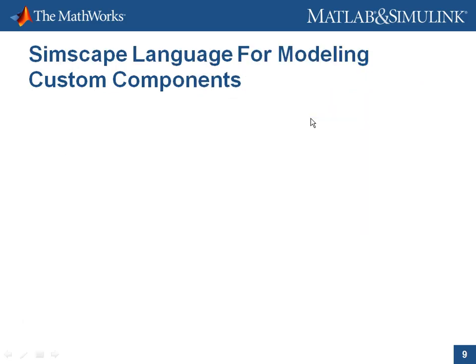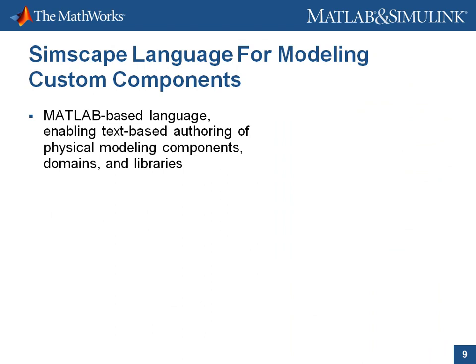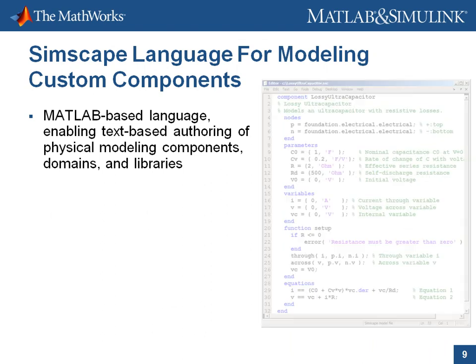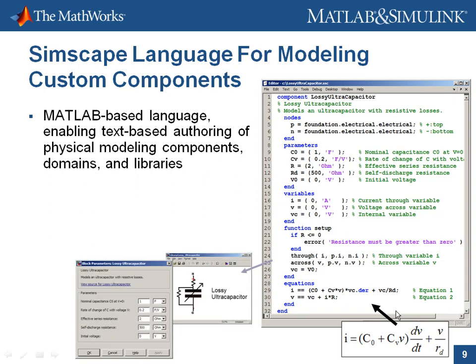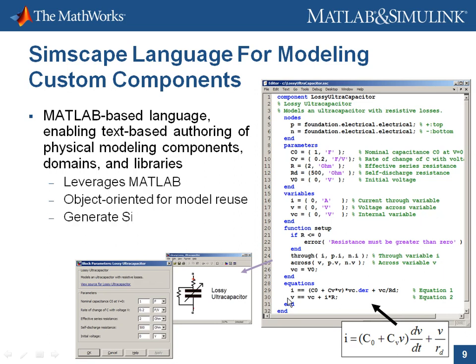The Simscape language is based on MATLAB and enables text-based authoring of physical modeling components, domains, and libraries. Here you can see source code for an ultracapacitor, another element found in hybrid electric vehicles. Textbook equations can be implemented in the equation section using that implicit definition. Key features: it leverages MATLAB for quick adoption, is object-oriented for model reuse, can generate Simulink blocks, and models can be saved as binary files to protect intellectual property.